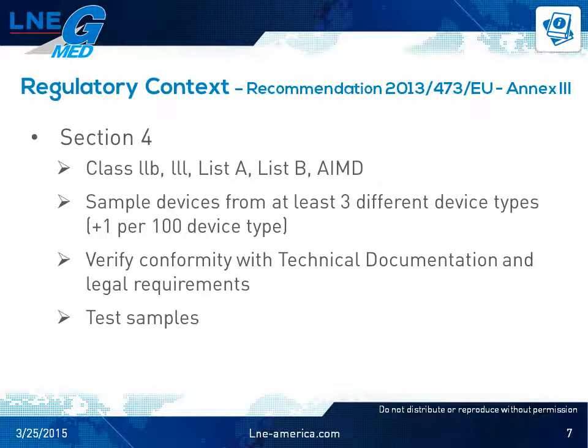Section 4 focuses on devices for which assessment includes EC type or design examination — higher risk classes such as active implantable devices, class 3 and list A devices, and some class 2B and list B devices. The sampling for these devices is different: the recommendation requires sampling of at least three different device types for manufacturers with fewer than 99 types, and one additional sample per 100 device types. The intent is the same — to verify conformity with technical documentation and legal requirements. For these categories, sample testing is mandatory. This is the main difference between the two sections: for lower risk medical devices, we may perform testing; for higher risk classes, we will perform testing.